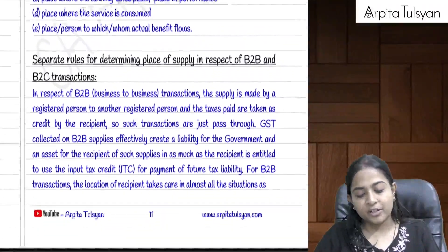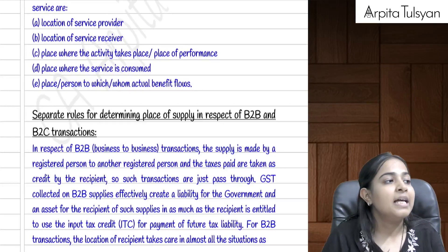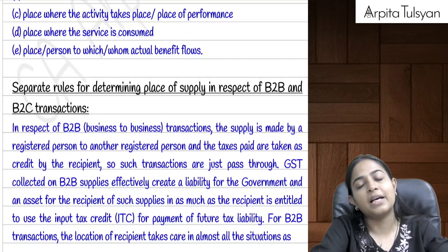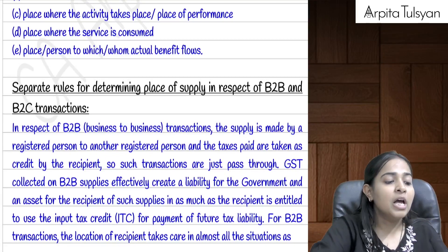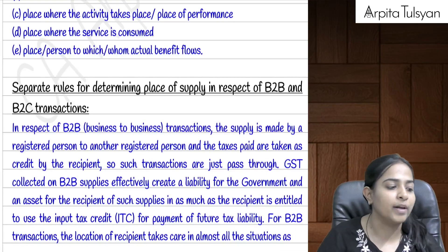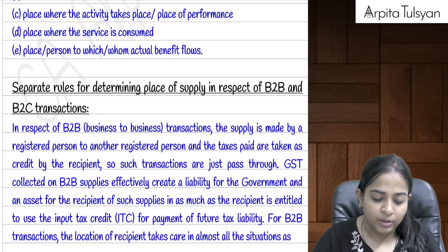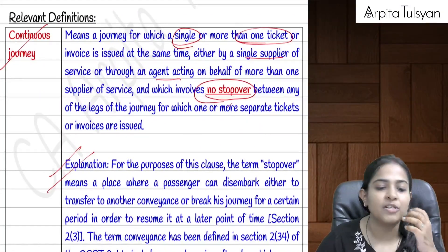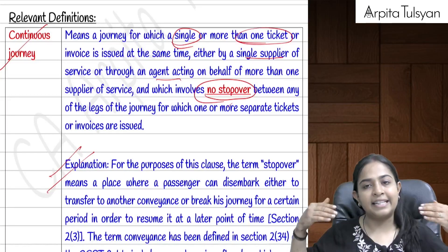There are separate rules for some cases — not all — particularly when services are provided to a registered person versus an unregistered person. This will be covered under Sections 10 and 12. Now let's look at a few relevant definitions. First is 'continuous journey', which is used in Section 12.